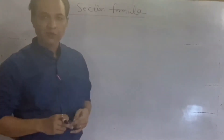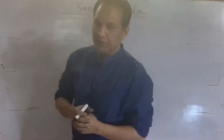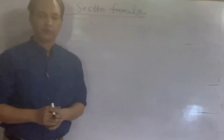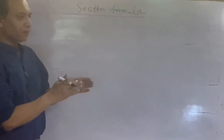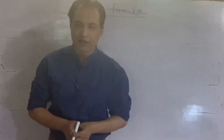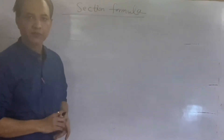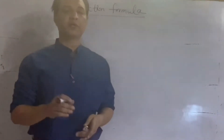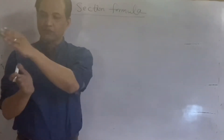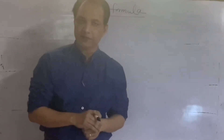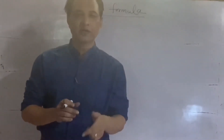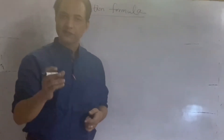Section formula में क्या करना होता है, पहले थोड़ा संदर्भ बता देता हूँ। एक line दी रहेगी, उसके दो end points के coordinates दिए रहेंगे — जैसे point A पता है, point B पता है। अब बोलेंगे कि point C जो है वो इसको divide कर रहा है, किसी ratio में जैसे 2:3 या 3:4। बता, C point के coordinates क्या हैं।